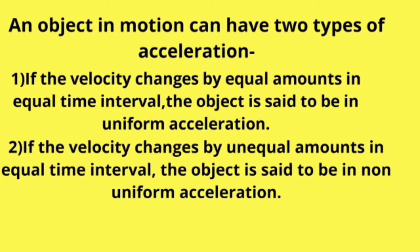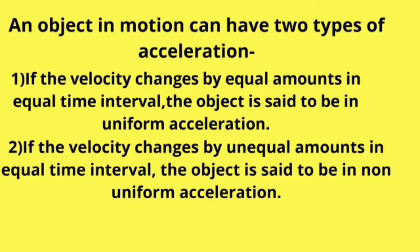An object in motion can have two types of acceleration. If the velocity changes by equal amounts in equal time intervals, the object is said to be in uniform acceleration. If velocity changes by unequal amounts in equal time intervals, the object is said to be in non-uniform acceleration.